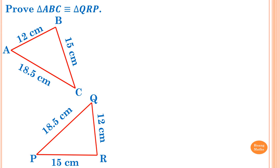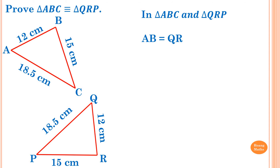Step one: write 'In triangle ABC and triangle QRP' — that's the first step. Step two: write down all the facts. AB is equal to QR — reason: given, because both are 12 cm as stated in the diagram.